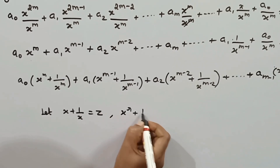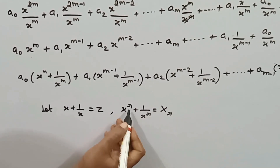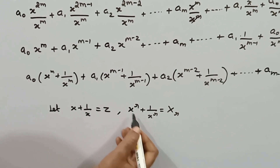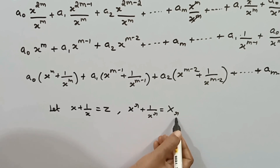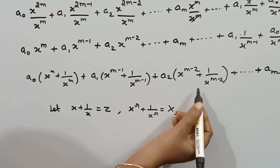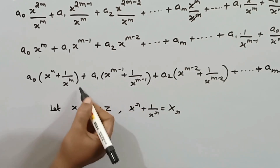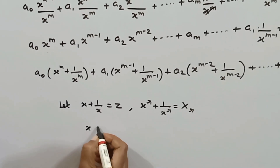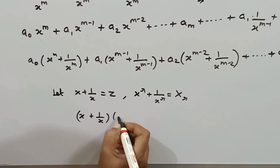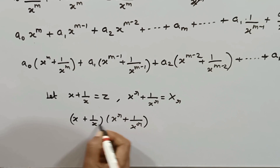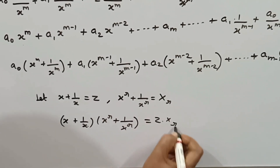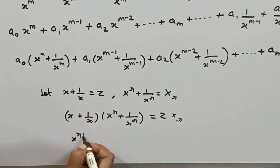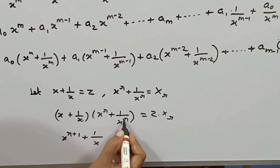Next, we consider x^r + 1/x^r and develop a recursive relation. We multiply x + 1/x by x^r + 1/x^r. The left-hand side gives z · x^r, and expanding the product on the right-hand side: x · x^r + x · (1/x^r) + (1/x) · x^r + (1/x) · (1/x^r), which simplifies to x^(r+1) + x^(r−1) + 1/x^(r−1) + 1/x^(r+1).